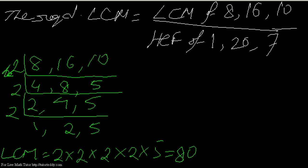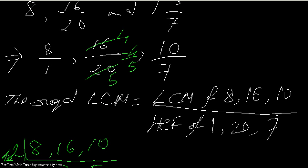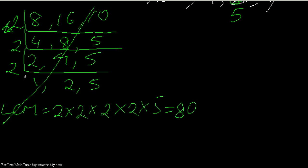But before proceeding, let me check my numbers once again. I see that 16/20 can be reduced further. I can cancel 16 and 20 by their common factor 4: 4 fours are 16 and 4 fives are 20, so the fraction reduces to 4/5. In that case, my required LCM will be LCM of 8, 4, and 10 divided by HCF of 1, 5, and 7.